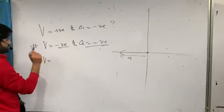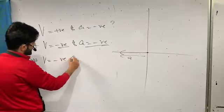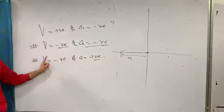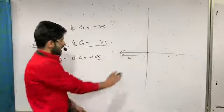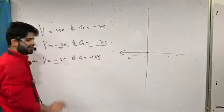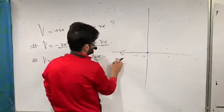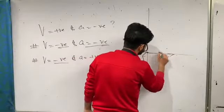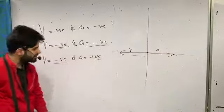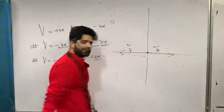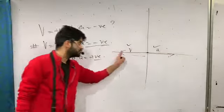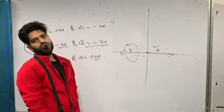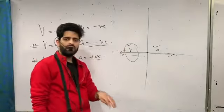Another scenario: velocity is negative and acceleration is positive. Velocity negative means velocity direction is leftward; acceleration positive means acceleration direction is rightward. In this case, velocity and acceleration have opposite directions, so the particle is going to slow down.